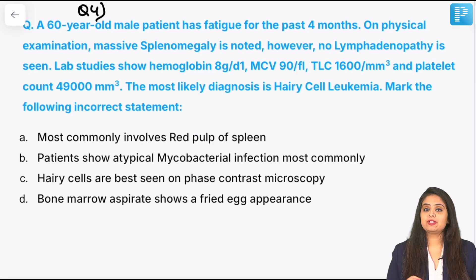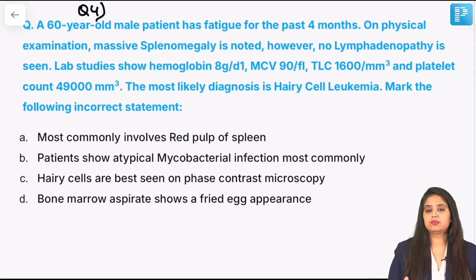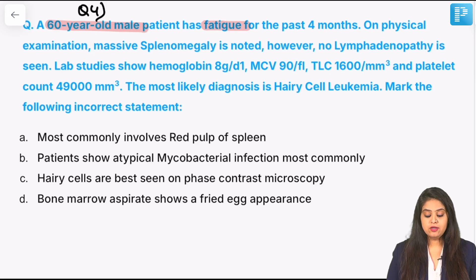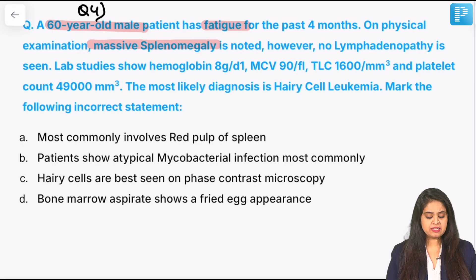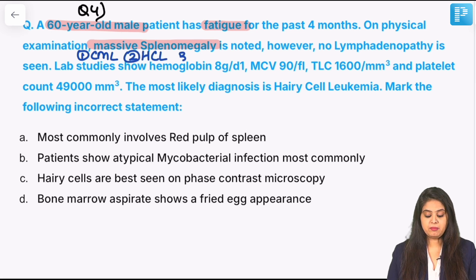Question 4 was given recently in the LRR. A 60-year-old male with fatigue for 4 months presents with massive splenomegaly on physical examination. In the exam, if leukemias are asked with massive splenomegaly, think of CML; if another leukemia or lymphoma is asked, think of hairy cell leukemia; and if an infection is asked, think of kala-azar. These three help narrow down choices. There is no lymphadenopathy seen.